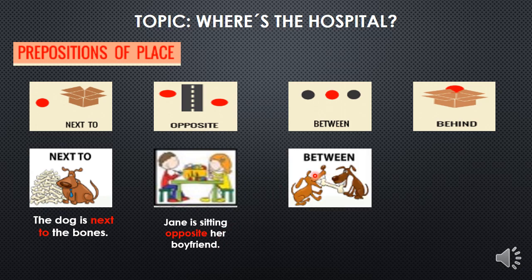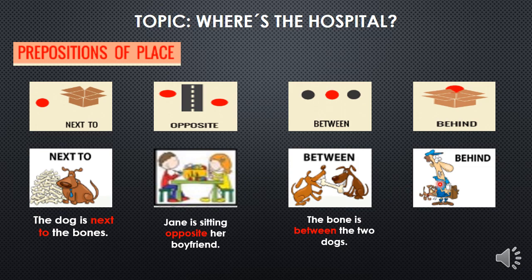Tenemos el siguiente: Between. ¿Qué estarán haciendo los perros? ¿Qué significará esta imagen? Tenemos la oración: The bone is between the two dogs. El hueso está entre los dos perros. Y por último tenemos behind. The dog is behind the postman. El perro está detrás del cartero. Very good.